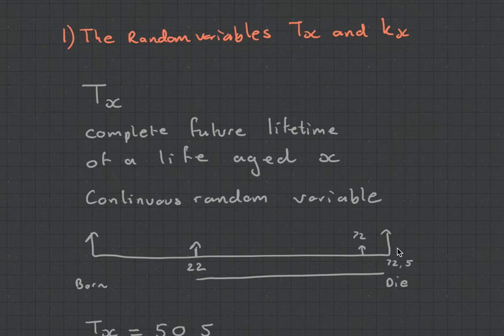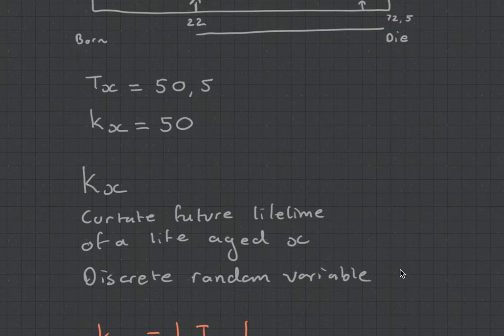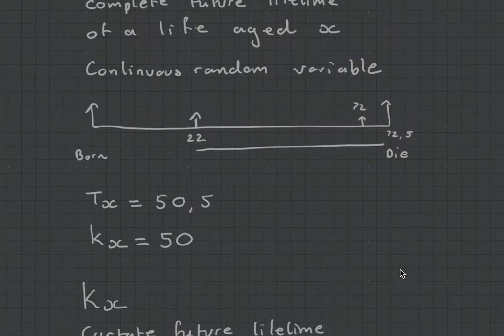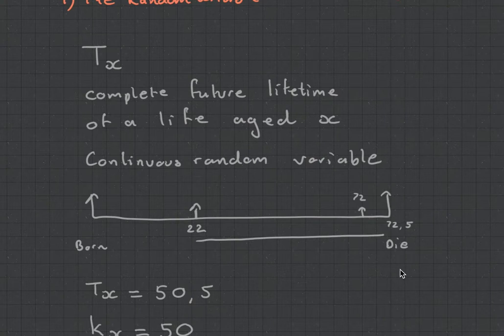The first word we're seeing here is complete. The best way to think of this is we're going to be looking later at Kx, which is the curtailed future lifetime or the incomplete future lifetime. What we mean by complete is we're counting everything. That's why this is a continuous random variable, because if the future lifetime is 50 years, 6 months, 3 days, and 22 seconds, the Tx is going to capture all of that information - the complete future lifetime.